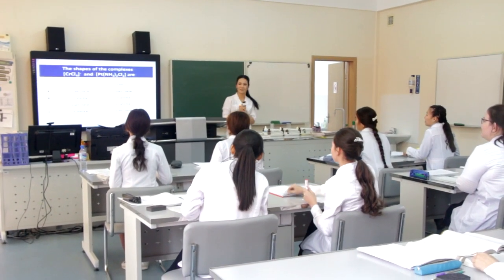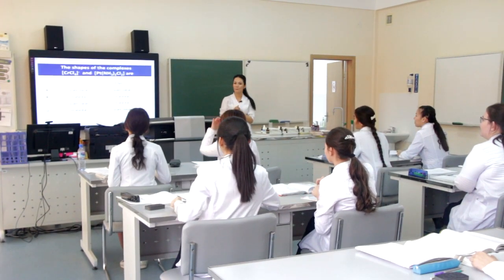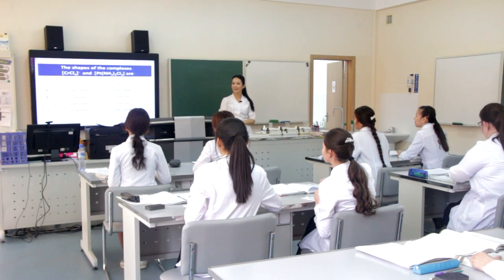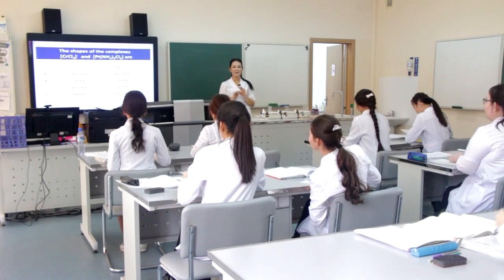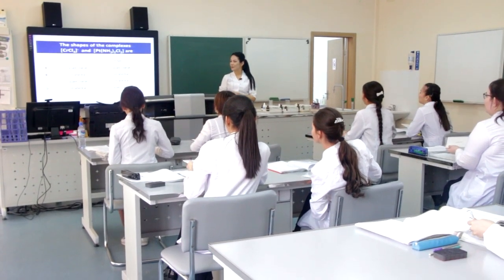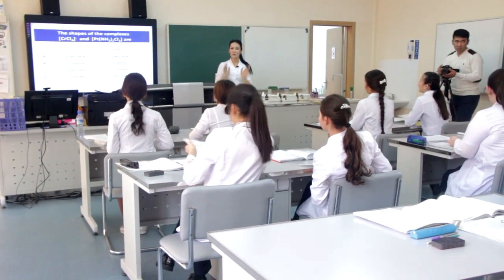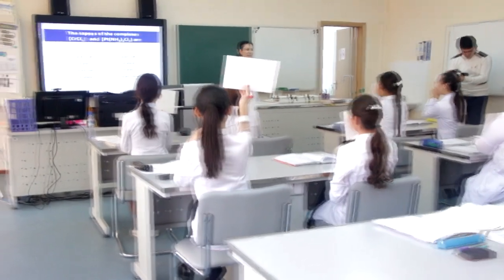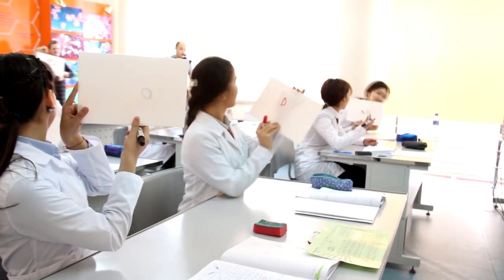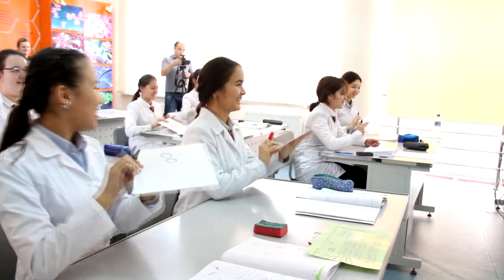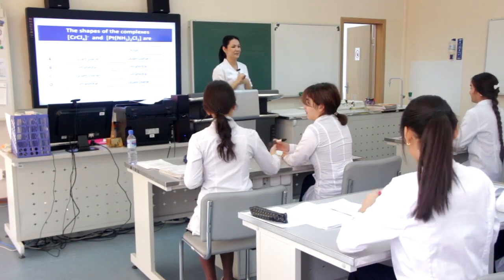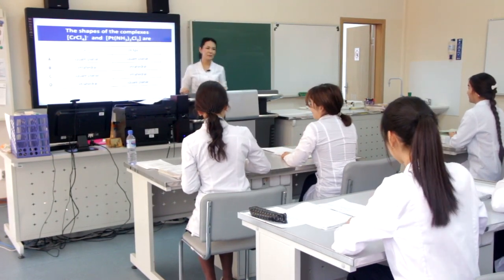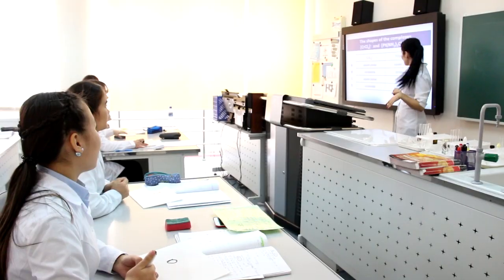The shapes of the complexes — chromium chloride and platinum. Show the answers. The correct answer is D. Why D? Can you explain to Arjun why it's D? Because platinum and nickel compounds always show square planar.